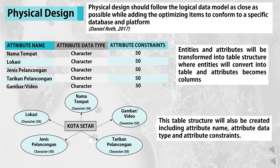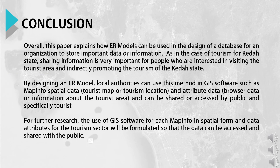The last stage is physical design. Physical design should follow the logical data model as closely as possible while adding optimizing items to conform to a specific database and platform. Entities and attributes will be transformed into a table structure, where entities convert into tables and attributes become columns. This table structure will also include attribute name, attribute data type, and attribute constraints.